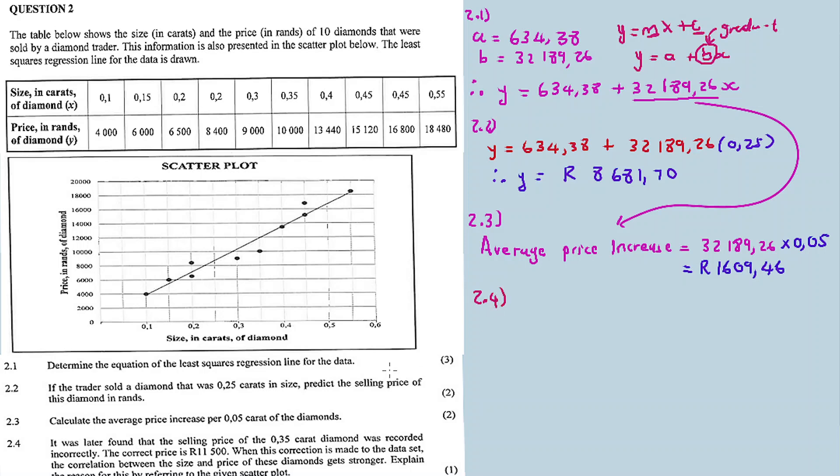Question 2.4: It was later found that the selling price of the 0.35 carat diamond was recorded incorrectly. The correct price is 11,500. Just imagine how much this chain costs. If 0.35 carat of a diamond costs this much, and a 0.5 carat diamond is not that big, imagine a famous rapper's chain with diamonds - I just wonder how much that would cost.